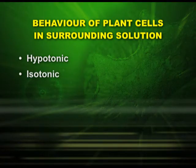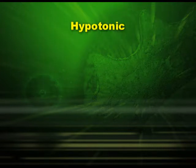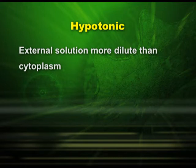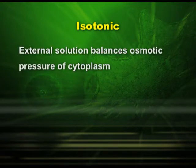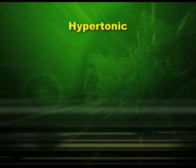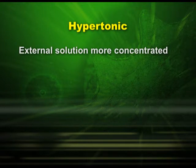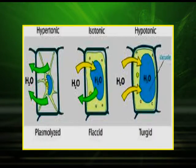Let us see the behavior of plant cells in surrounding solutions. There are three types: hypotonic solutions, isotonic solutions, and hypertonic solutions. In a hypotonic solution, the external solution is more dilute than the cytoplasm. In an isotonic solution, the external solution balances the osmotic pressure of the cytoplasm. In a hypertonic solution, the external solution is more concentrated. In the diagram, in the hypertonic solution water moves out — we call it a plasmolyzed state — while in the other cases, water moves in giving a flaccid and then a turgid cell.